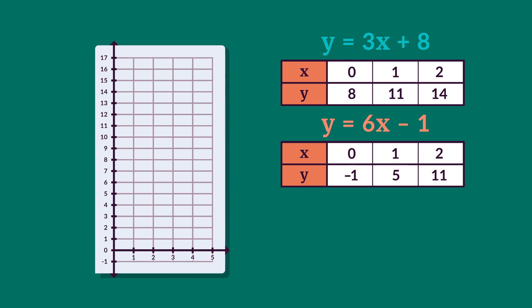Plot the points for y equals 3x plus 8 and draw a line through these points. Then do the same for the equation y equals 6x minus 1.